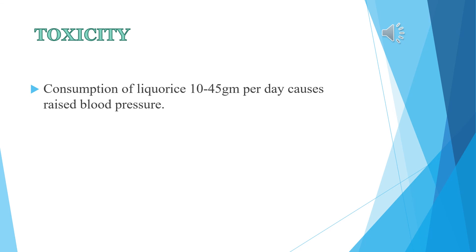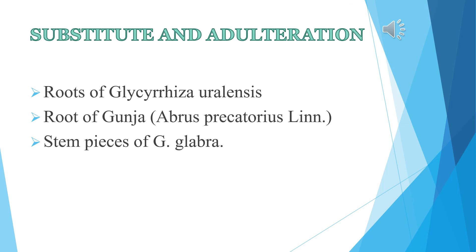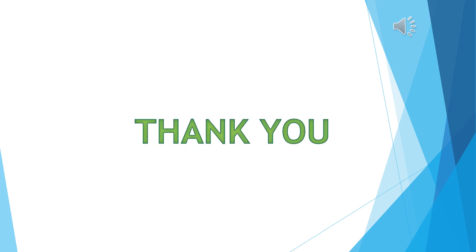Toxicity: consumption of licorice 10 to 45 grams per day can cause raised blood pressure. Substitutes and adulteration: the roots of Glycyrrhiza uralensis, another species of Glycyrrhiza, are used as an adulterant. The root of Gunja (Abrus precatorius Linn.) is also mixed with Glycyrrhiza glabra root, and stem pieces of Glycyrrhiza glabra are also mixed as an adulterant. Today we have discussed the plant Yashti Madhu, which is a very common and important plant. Thank you so much students for listening patiently. All the best — stay safe, stay healthy, and stay at home.